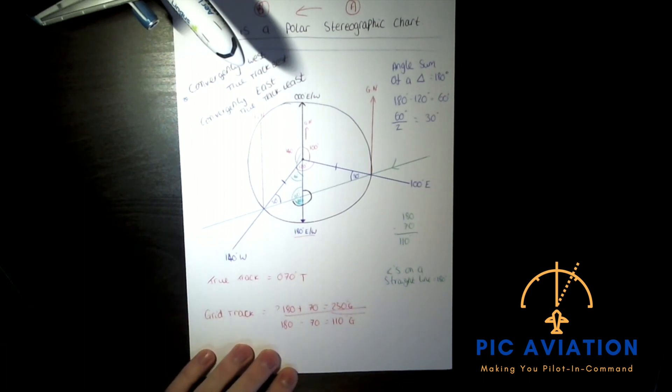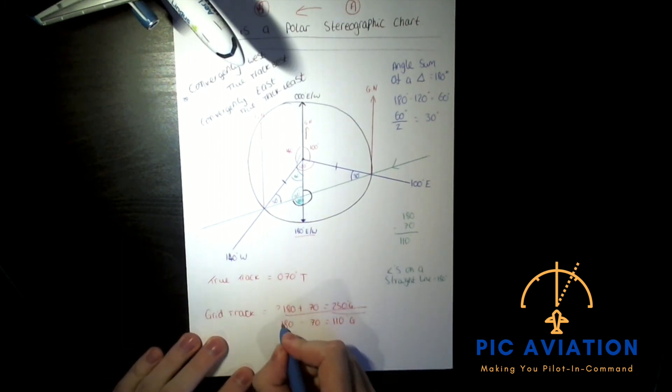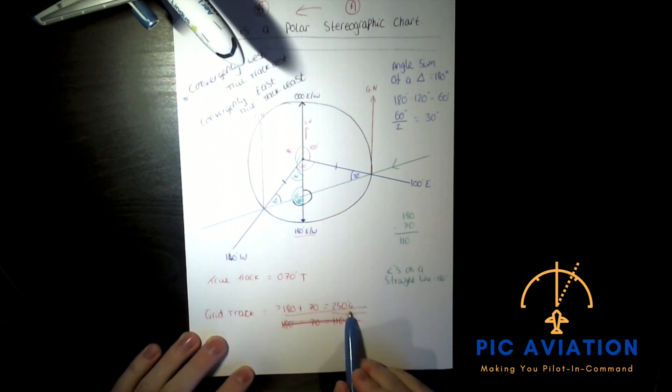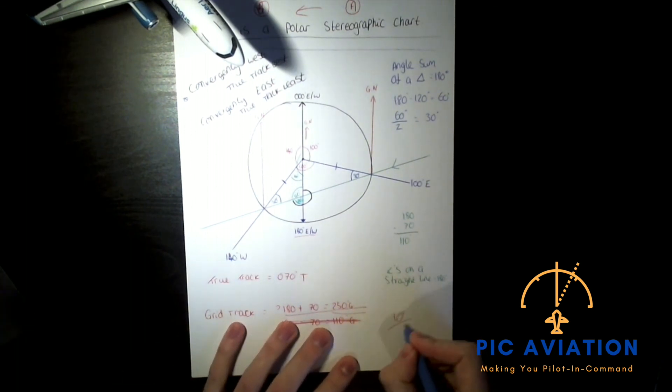And therefore we can say that the grid track is 250 degrees grid. So true track is 070 degrees true. The grid track is 250 degrees grid. And that would give us 10 out of 10 marks.